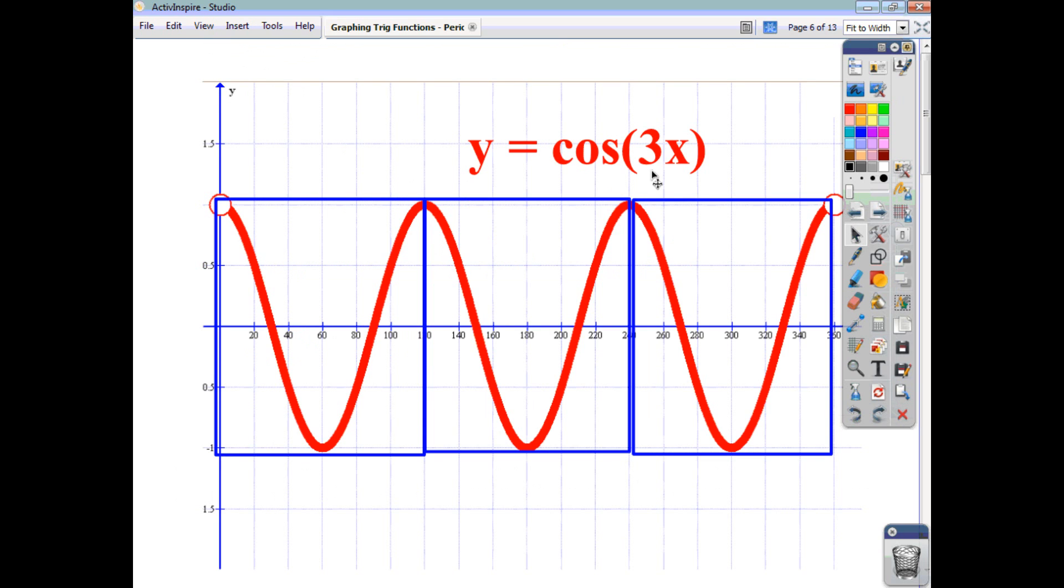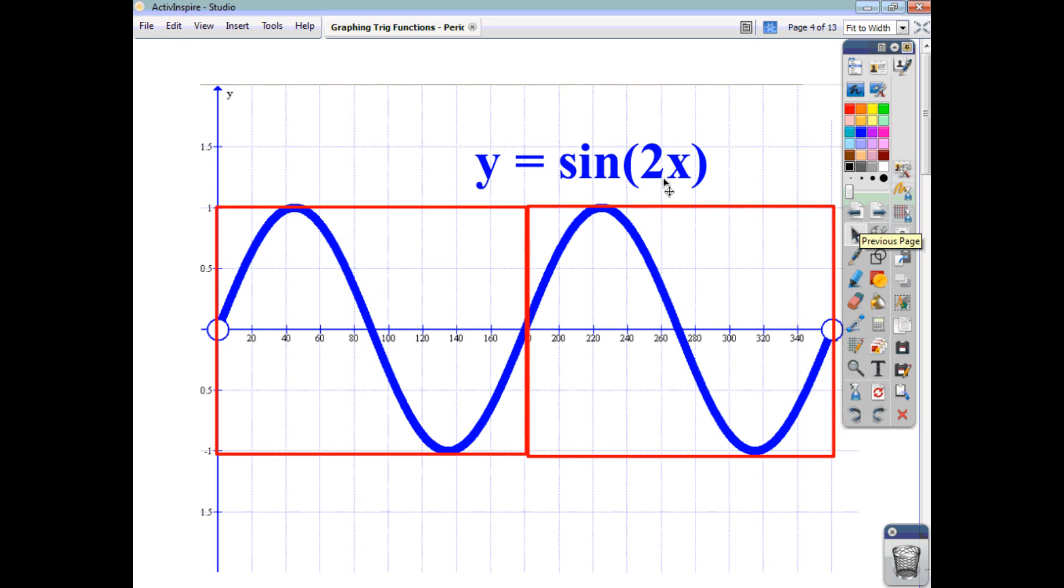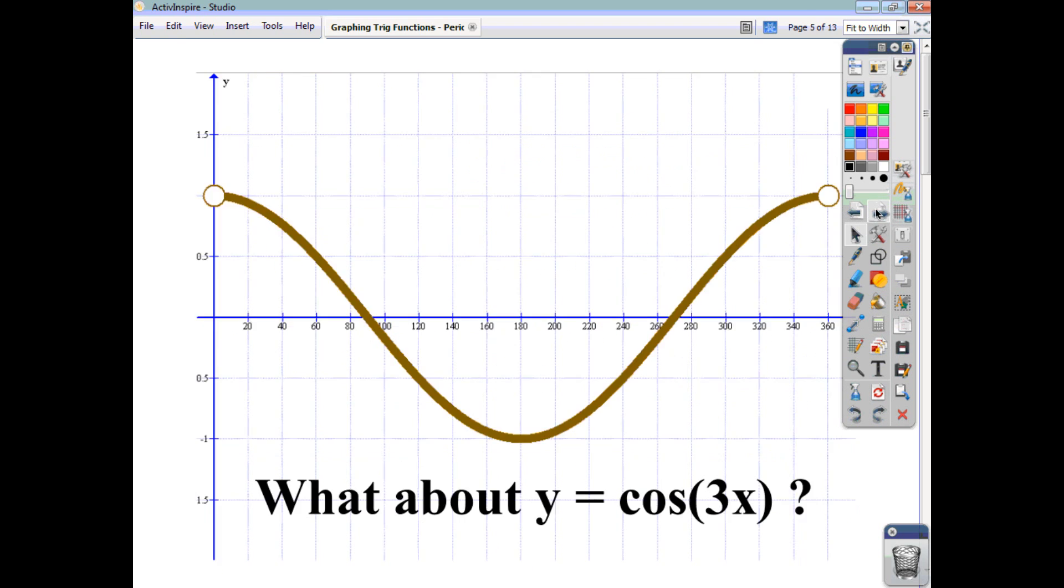So we saw that in the previous one. 3x, so three cycles. 2x, so two cycles.